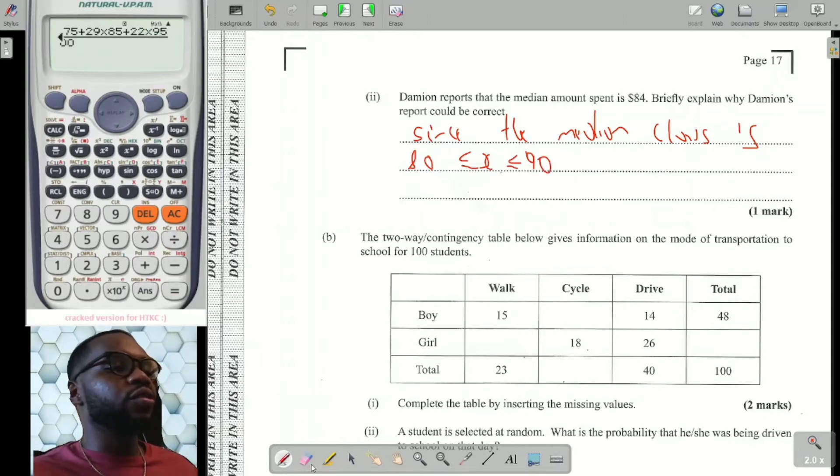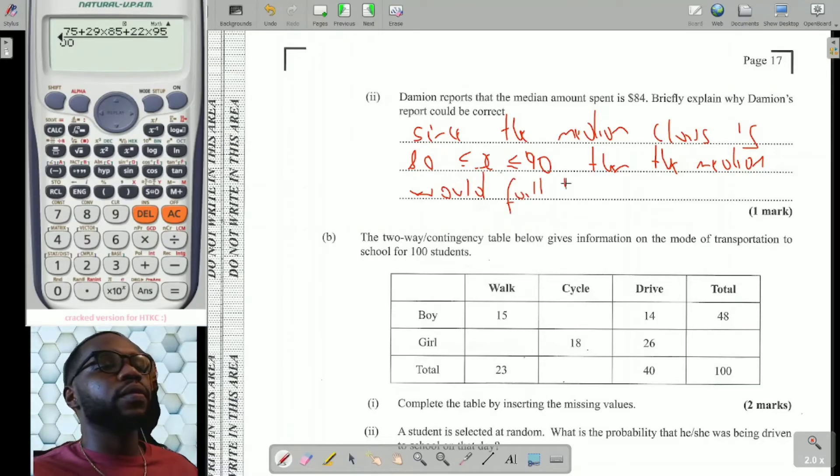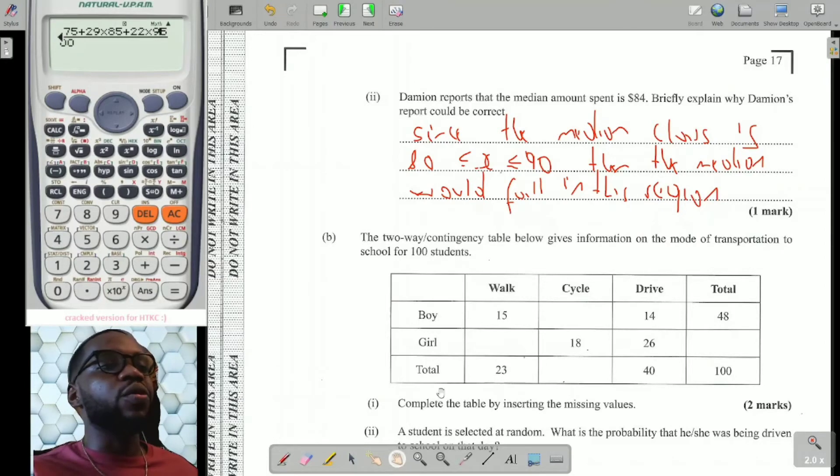So how do I justify that? Simply put, we say since the median class is between 80 and 90, or $80 < x < $90, since this is where the median class falls, then the median would fall in this region. And 84 falls in the region. So that is how we know that he could be correct. Once he estimates a value that falls within the median class, then any possible value in there could be the median.